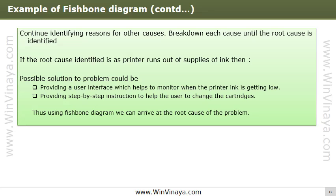Depending on the complexity and importance of the problem, you can now investigate the most likely causes further — this may involve setting up investigations, carrying out surveys, and so on. In this example, if the root cause identified is that the printer runs out of ink supplies, then possible solutions could be providing a user interface to monitor when ink is getting low, or providing step-by-step instructions to help users change cartridges.